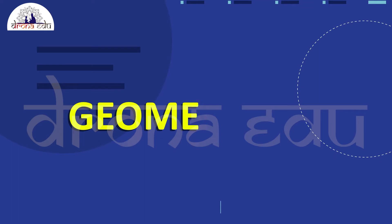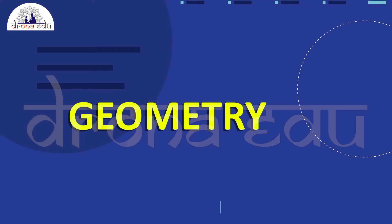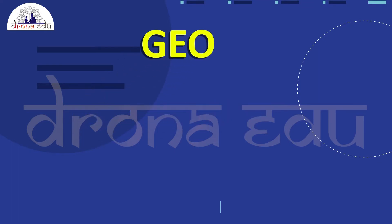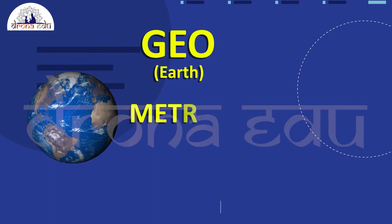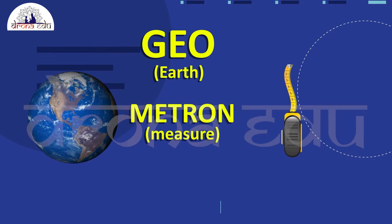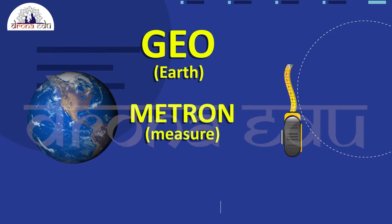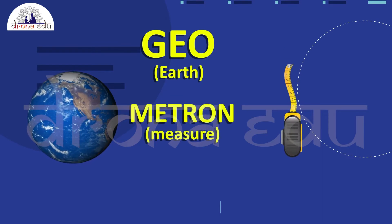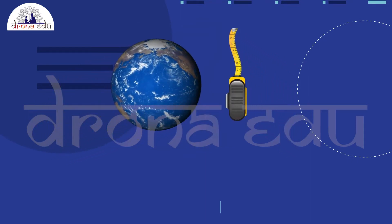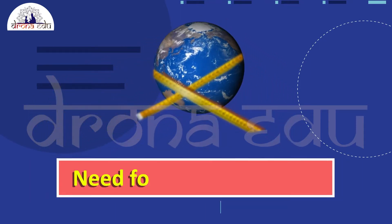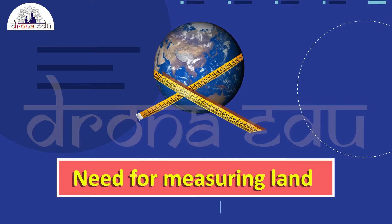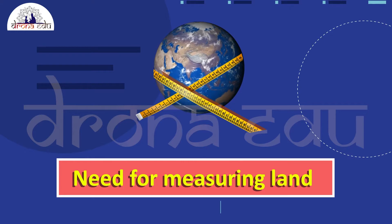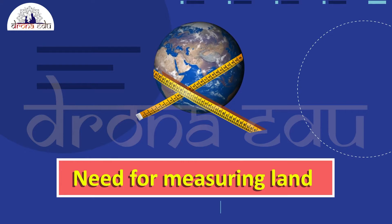The word geometry comes from the Greek words geo meaning the earth and metron meaning the measure. Geometry appears to have originated from the need for measuring the land.